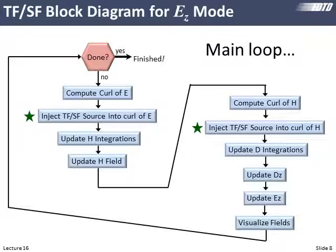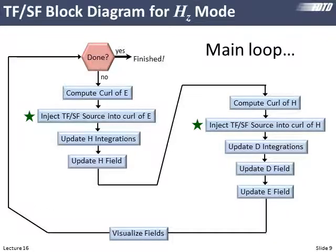We modified the block diagram of our main loop. The only change is that after we calculate the curl, we have an additional loop that works horizontally across the grid incorporating those correction terms at the total field/scattered field interface. There are two places where we calculate curl — in the H field update we compute curl of E, and in the D field update we compute curl of H — and immediately following each, we insert those correction terms to produce our one-way source.